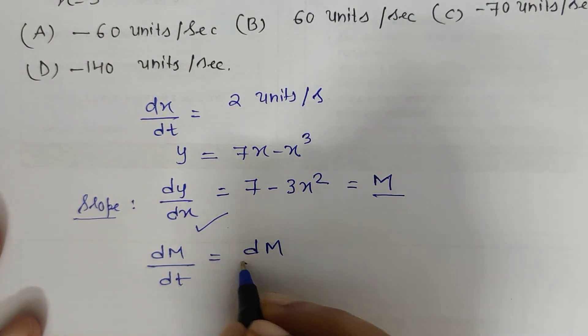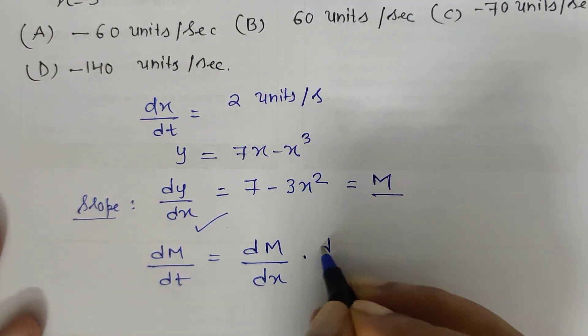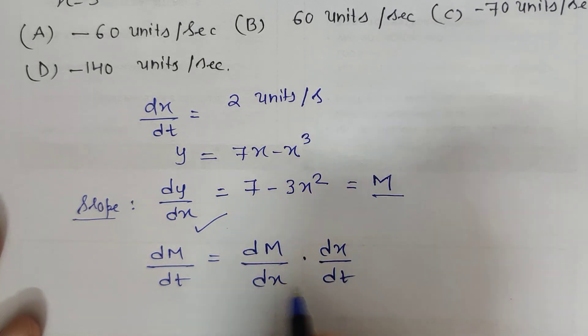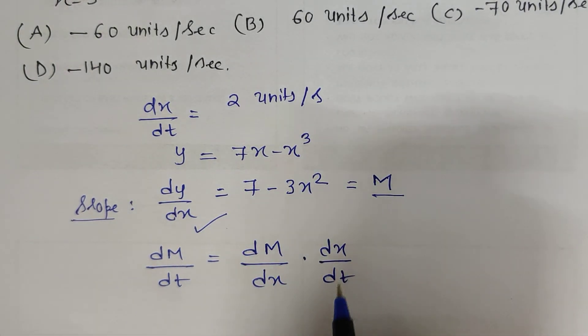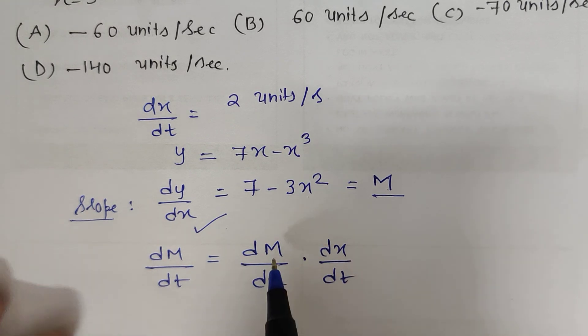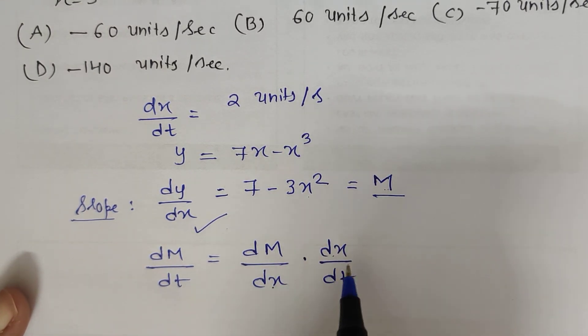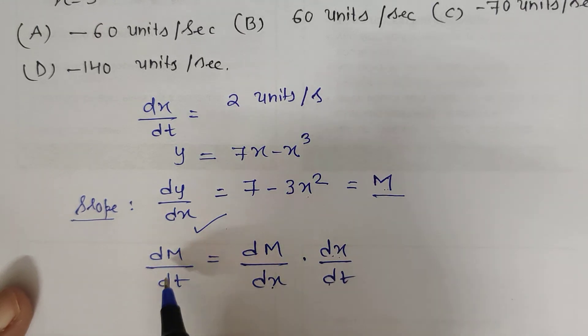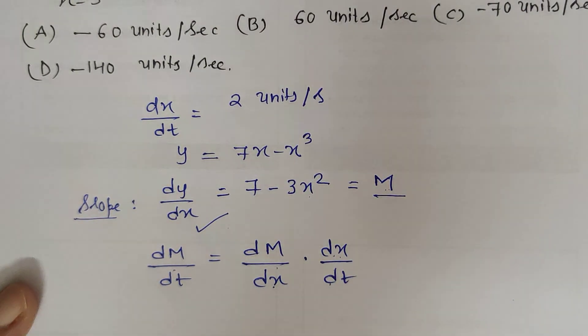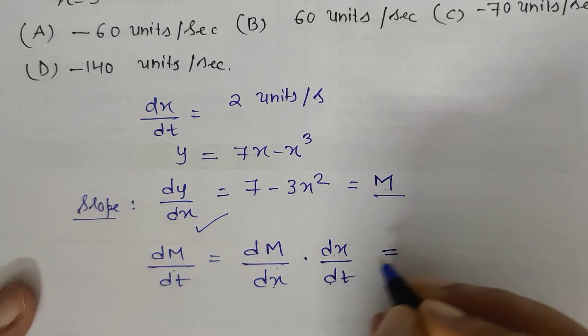This can further be written as dM/dt = dM/dx × dx/dt. Both are the same thing, because M has variable x, so I have to differentiate with respect to x and multiply by dx/dt. This form is given in the NCERT explanation part which you can easily check.